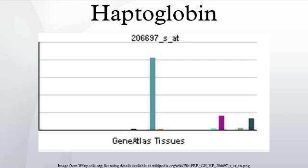Haptoglobin is produced mostly by hepatocytes but also by other tissues, for example, skin, lung, and kidney. In addition, the haptoglobin gene is expressed in marine and human adipose tissue. Haptoglobin has also been shown to be expressed in adipose tissue of cattle.